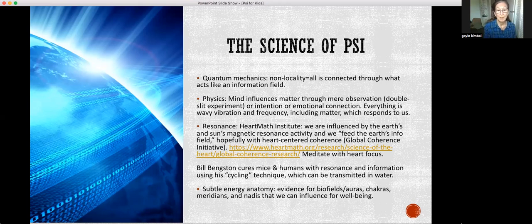There's a famous double-slit experiment where electrons and photons change whether they're a wave or particle depending on whether they're observed or not. Our intention influences matter, our emotional connection influences matter. Everything at its base is wavy vibration and frequency, and we influence that with our thoughts, which are also frequency and waves. Another explanation for how anomalous events like ESP work is resonance. The HeartMath Institute found that we're influenced by the earth and sun's magnetic resonance activity, and we influence the earth's field.